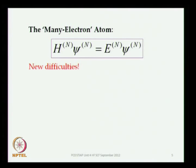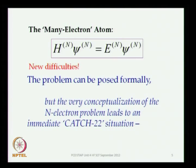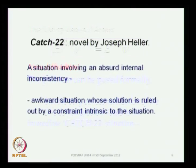These new difficulties create a situation that can perhaps be called a Catch-22 situation. This phrase comes from a novel by Joseph Heller, and it made such an impact on the English language that it became an accepted phrase. What it means is that you have a situation with some internal inconsistency — you can describe and seek to solve it, but the solution becomes impossible to implement because of some internal constraint intrinsic to the system.